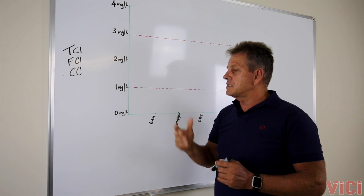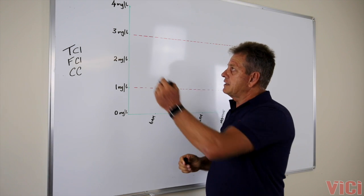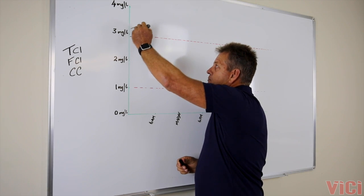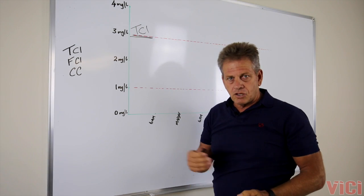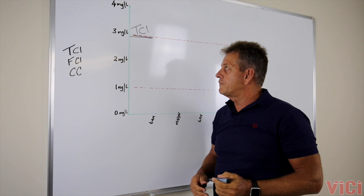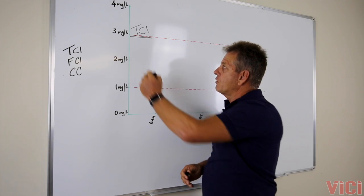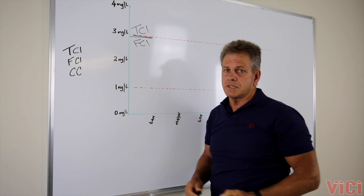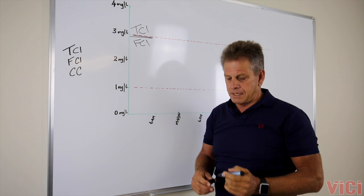So for today, let's use for example the fact that our total chlorine read will start off at three parts per million. Now if our circulation system is working efficiently, the free chlorine read should be exactly the same—it should also be at three parts per million.